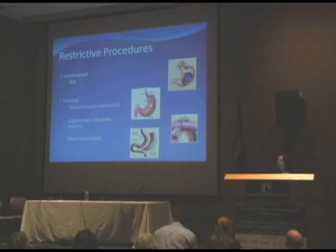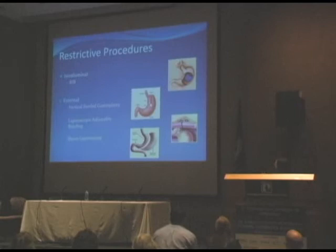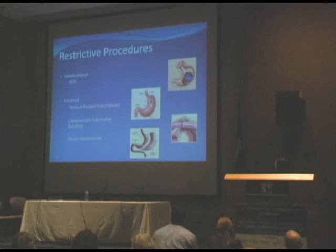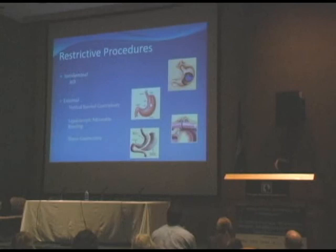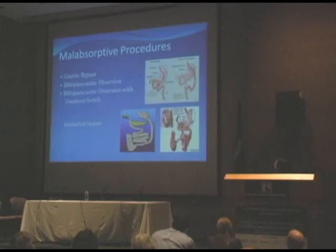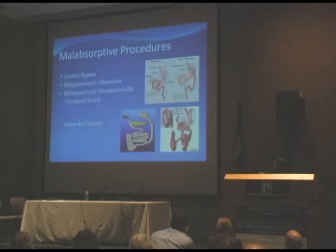Restrictive procedures include intraluminal balloon, sleeve gastrectomy (which does cause some microgastria and restriction), band gastroplasty, and laparoscopic banding. Malabsorptive procedures include gastric bypass — which involves some degree of carbohydrate malabsorption/dumping due to loss of the pyloric brake — and two types of biliopancreatic diversion: the classic diversion with a loop of small bowel to the ileum, and the duodenal switch, which leaves the stomach remnant with the pylorus for some proximal bowel micronutrient exposure. Jejunal-ileal bypass was done in Prader-Willi syndrome back in the 1970s but is no longer performed.